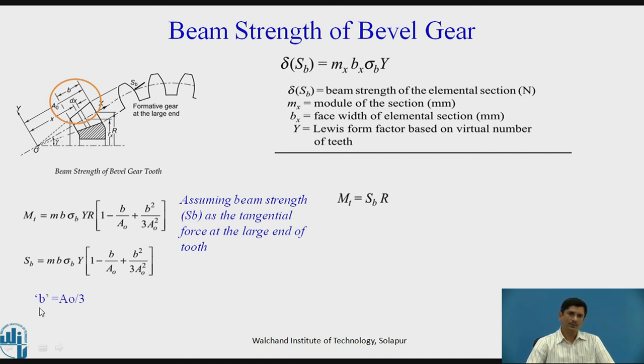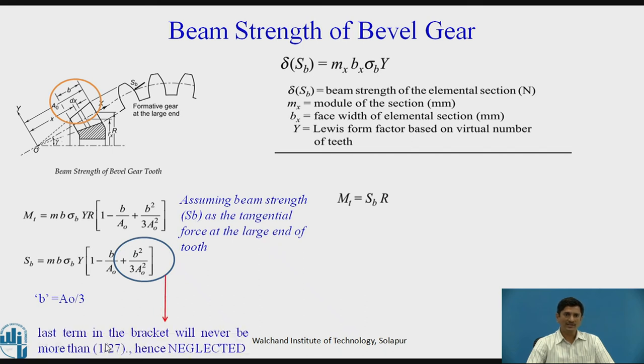As we know that B equals A0 by 3, this B is A0 by 3, and for this particular bracket B square upon 3 A0 square, it happens that the last term in the bracket will never be more than 1 by 27, hence we neglect it. Therefore, this particular equation of Sb, or the beam strength for bevel gear, simplifies, and we get Sb equals Mb sigma B Y into bracket 1 minus B by A0. This is the equation for beam strength of a bevel gear, considering Y as it is based on virtual number of teeth. M is the module, B is the face width, and sigma B is the bending stress, which is obtained as SUT by 3.